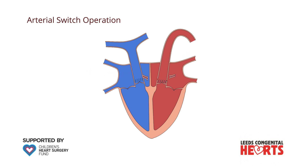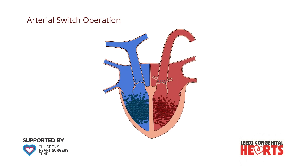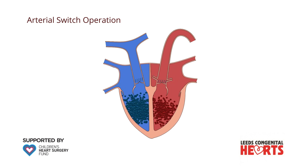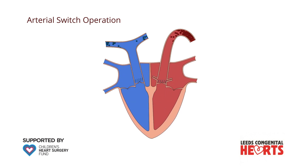The coronary arteries are then reconnected to the aorta in its new position. The arterial switch operation therefore results in a normal circulation, with oxygenated blood being pumped from the left ventricle to the body via the aorta and blood that is low in oxygen being pumped from the right ventricle to the lungs via the pulmonary artery.